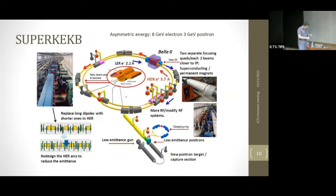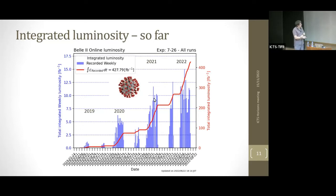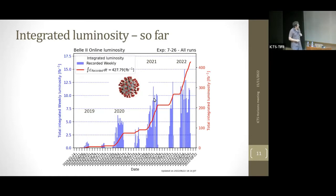We started running with a fully instrumented detector in 2019 — slow start, but we managed to run all the way through the pandemic, which was a remarkable achievement due to the dedication of our colleagues at KEK. We've now increased luminosity again and in the last year integrated the largest sample so far: just over 427 inverse femtobarns — 0.4 inverse attobarns — which is already essentially the size of what BaBar collected. So we can do some physics with this.